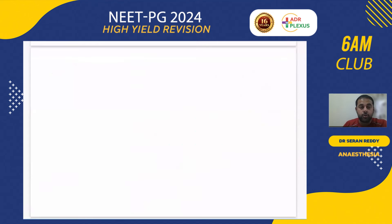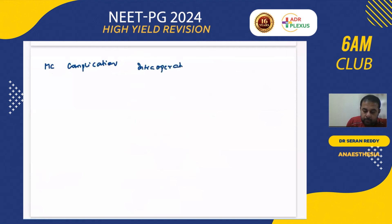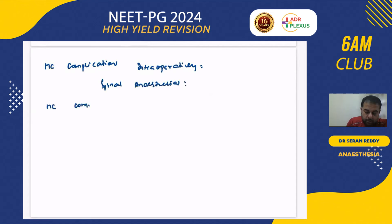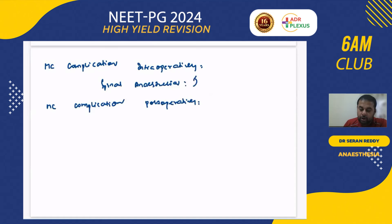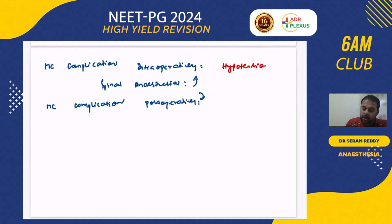Another important point: the most common complication intraoperatively with spinal anesthesia is hypotension. Postoperatively, the most common complication is urinary retention. Remember, don't get carried away by answering headache — headache is not the most common complication but is most worrisome.